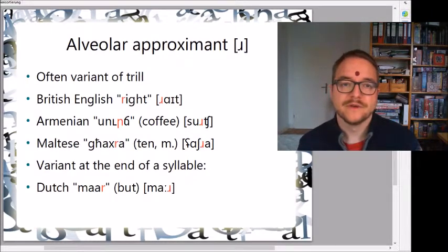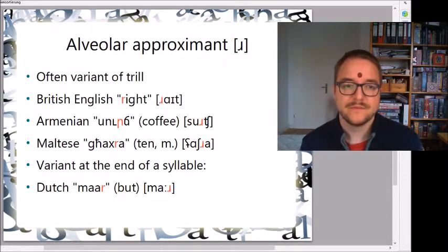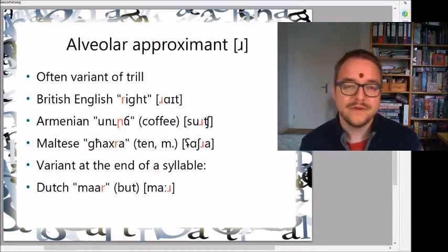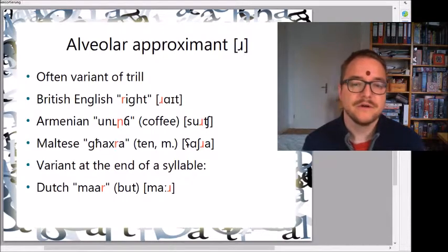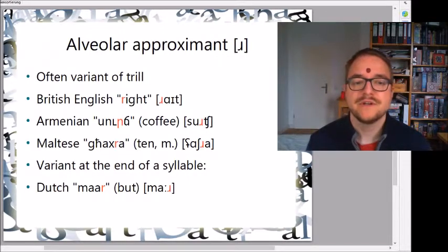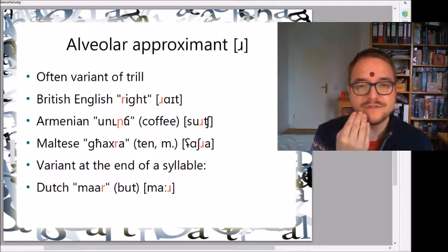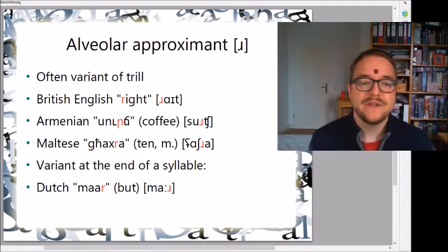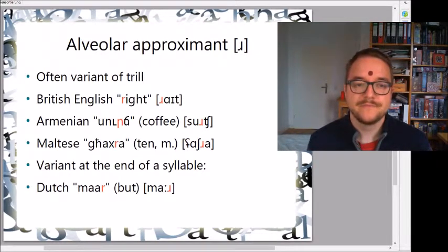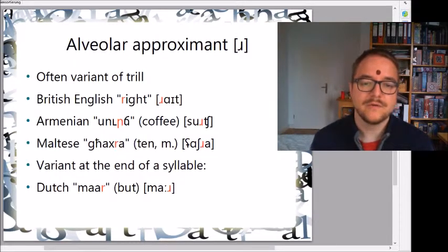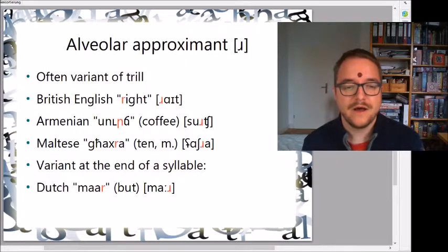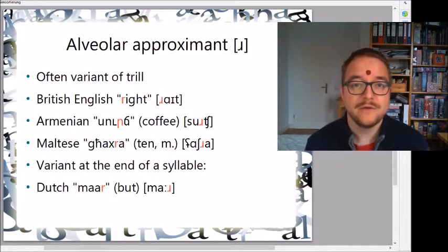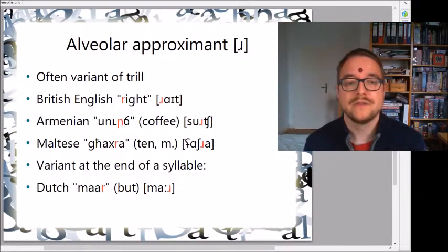The second version of rotics are the approximants — both the alveolar and post-alveolar approximants. They are sometimes also a variant of a trill. British English has the alveolar approximant in 'right', where the tongue only approaches the alveolar ridge but doesn't touch it. Armenian has it in a word meaning 'coffee', and Maltese also has this kind of English-sounding R. Dutch can have the alveolar approximant at the end of a syllable, like 'maar' meaning 'but'.